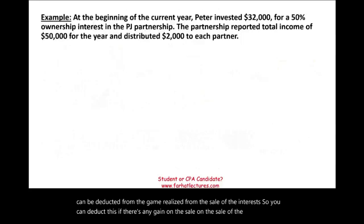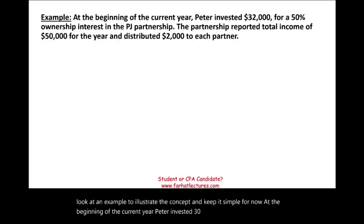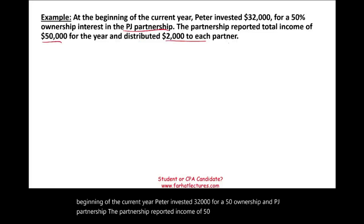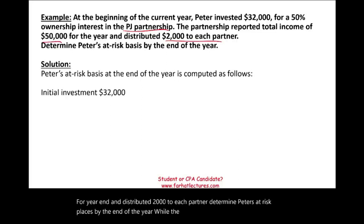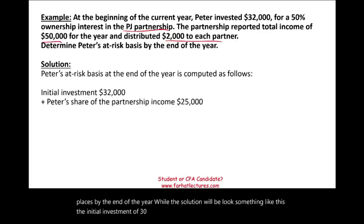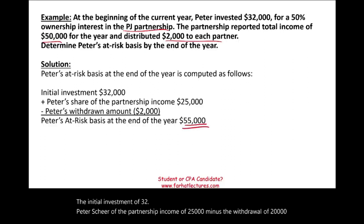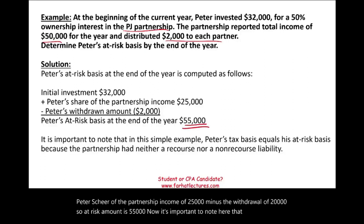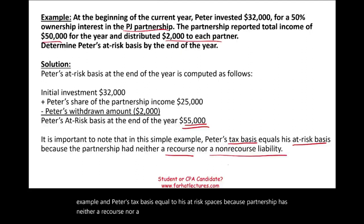Let's look at an example. At the beginning of the current year, Peter invested $32,000 for a 50% ownership in PJ Partnership. The partnership reported income of $50,000 for year-end and distributed $2,000 to each partner. Determine Peter's at-risk basis by year-end. The solution: initial investment of $32,000, plus Peter's share of partnership income of $25,000, minus the withdrawal of $2,000 — giving an at-risk amount of $55,000. Note that Peter's tax basis equals his at-risk basis here because the partnership has neither recourse nor non-recourse liabilities to worry about.